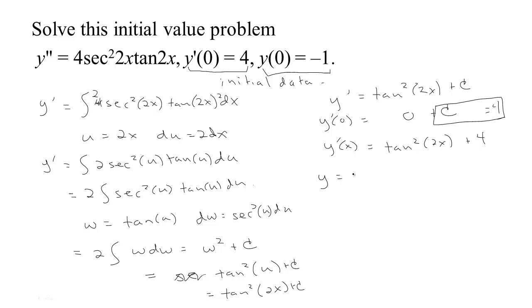Now to find y, I need to find the antiderivative of y prime. So I need to find the antiderivative of tangent squared 2x plus 4 with respect to x. Now to do the tangent squared, I'm going to have to use an identity. Remember that 1 plus the tangent squared is the secant squared. So I'm going to write the tangent squared as secant squared minus 1.